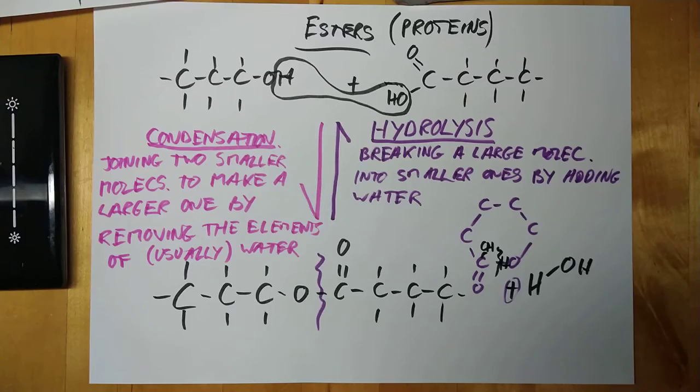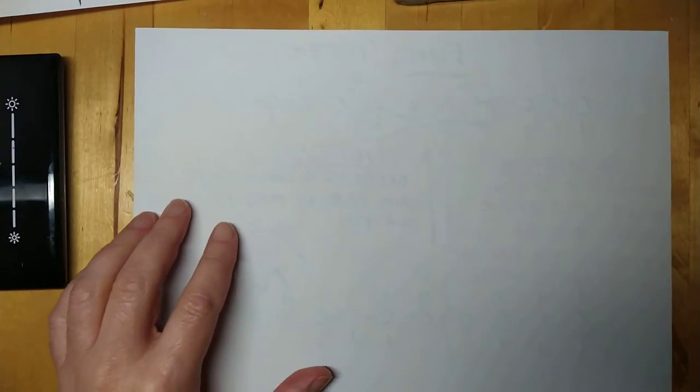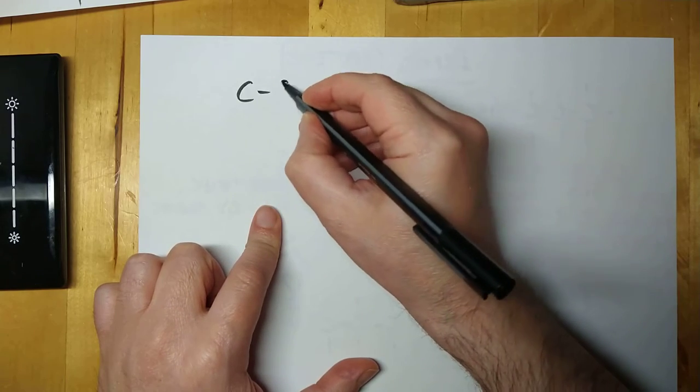And it looked something like this. It was a cyclic ester, in fact. And if you break that apart, you recreated a carboxylic acid on here. And created this as an alcohol. Technically speaking, that is still hydrolysis, even though you're not really making two smaller ones.